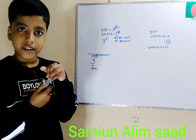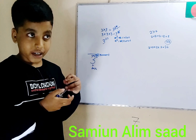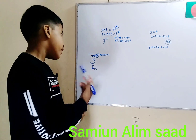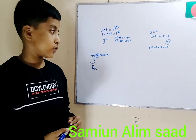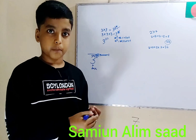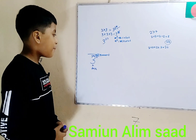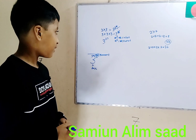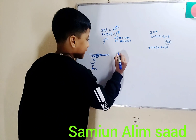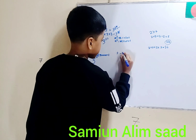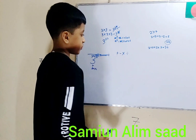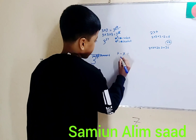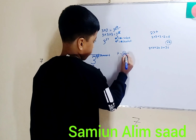Something a bit confusing is that exponents are just like regular operations — addition, subtraction, multiplication, and division — in that they tell us to do something with numbers. But those operations all have clear symbols: plus for addition, minus for subtraction, and various symbols for multiplication and division.